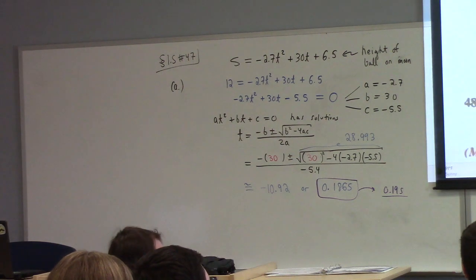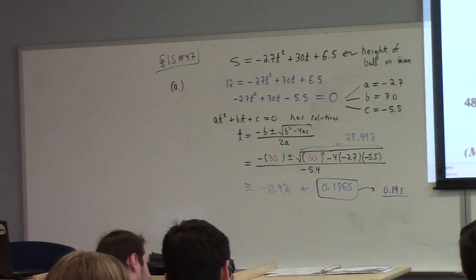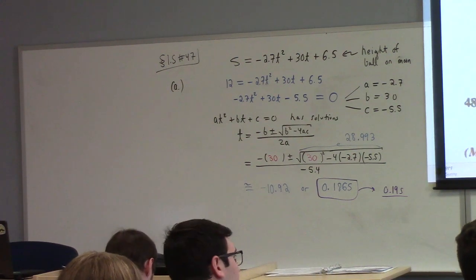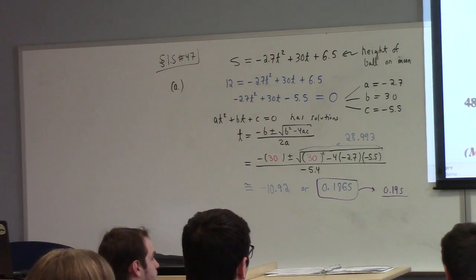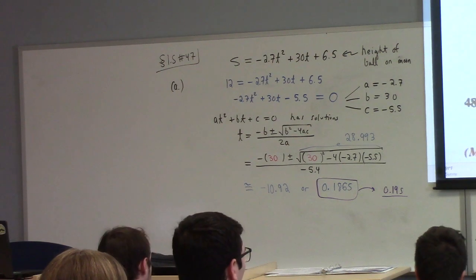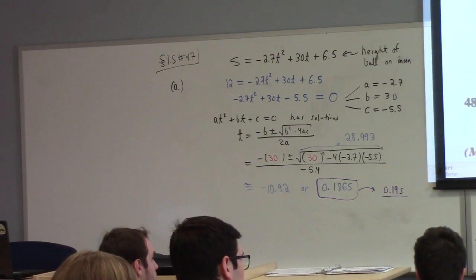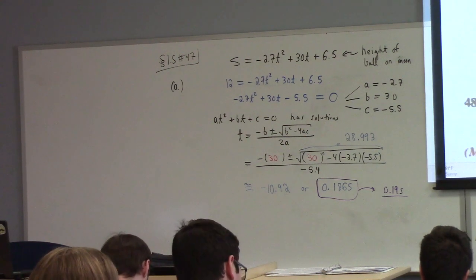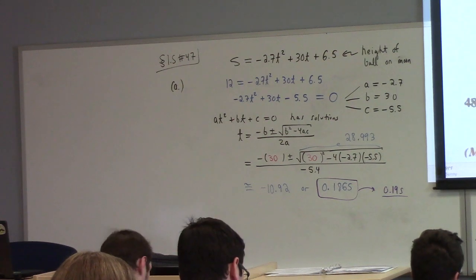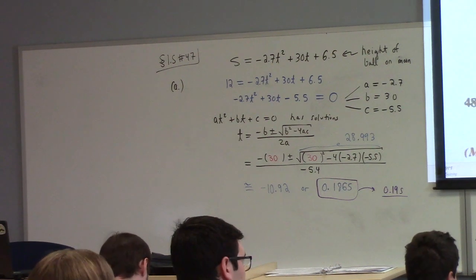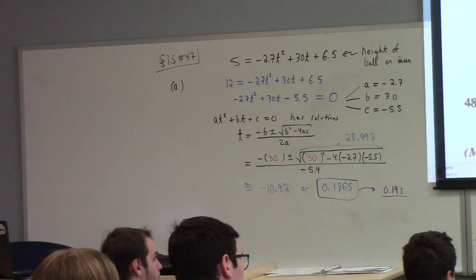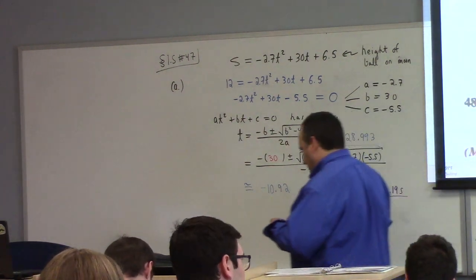So, we would have to solve S equals 0 to find when it hits the surface again, right? Which means we have to solve the quadratic equation minus 2.7 T squared plus 30 T plus 6.5 equals 0.